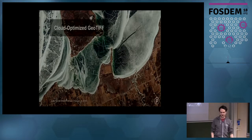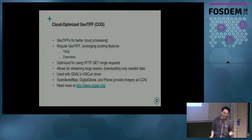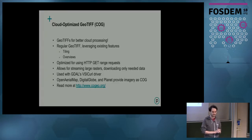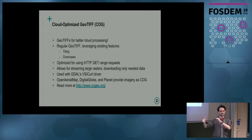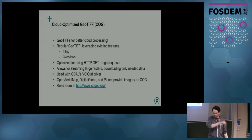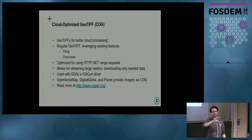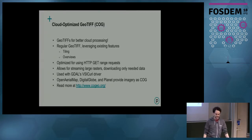A really cool thing is that a lot of imagery providers are now making cloud-optimized GeoTIFFs. These are GeoTIFFs that work a lot better for cloud processing. Essentially, they have the header information at the very beginning, and it's a tiled image — usually 256×256 or 512×512 tiles — and they have all the overviews built in. By doing this, you can essentially just do a range request: GDAL gets the header and figures out what byte range holds the imagery you need for a specific window, or where the overviews are — then it downloads only the data it actually needs.